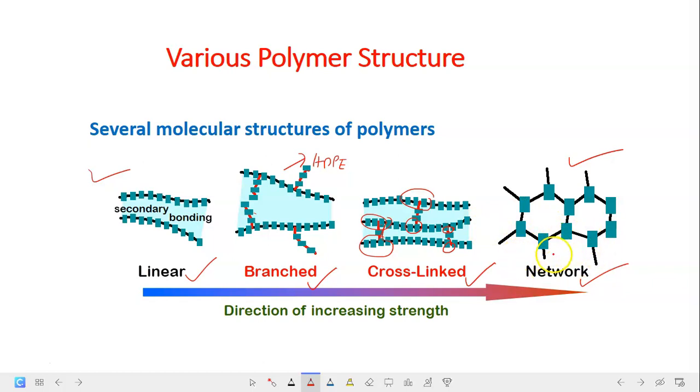And the next one is the network. This is the strongest compared to others. So for the networked polymers, it contains around three or more covalent bonds that eventually transform them into three-dimensional networks. So that's why they are termed as networked polymers. The example of polymer that have networked structures, epoxies. Next, we have polyurethane.